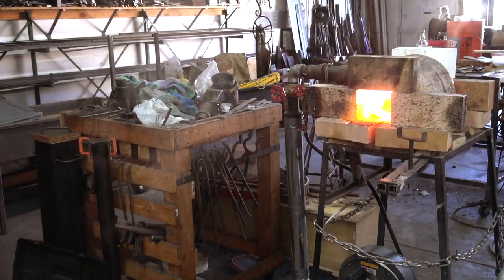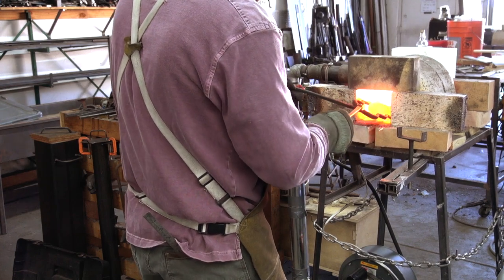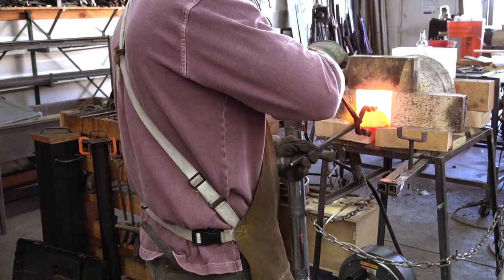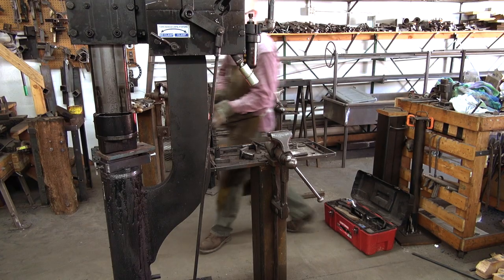Now comes the time to work the ingot. Our goal is to forge it into a solid bar that can be used for sword blades or knives. We forge the ingot so that the top forms the back of the blade and the bottom the cutting edge.